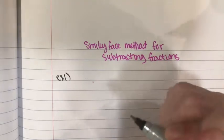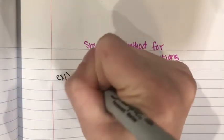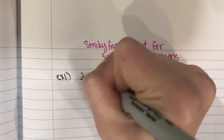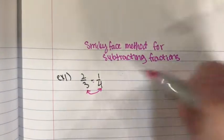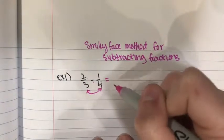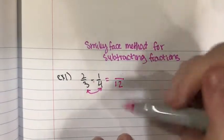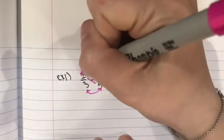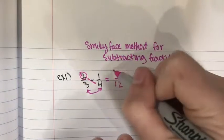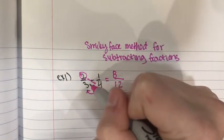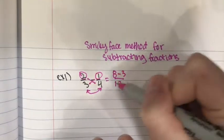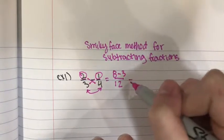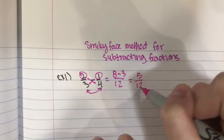The first example we're doing is 2/3 minus 1/4. The first step is to multiply your denominators. So 3 times 4 is 12, and now you multiply 4 times 2, giving you 8, and then 3 times 1, giving you 3. You subtract those, giving you 5/12.